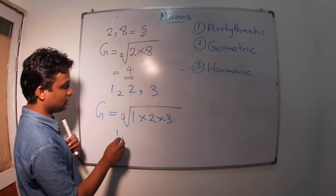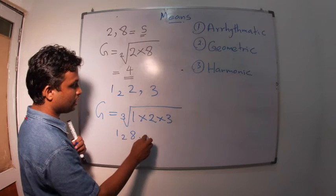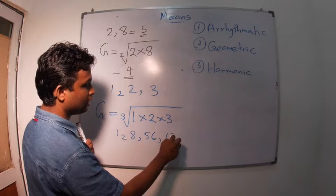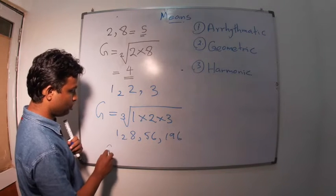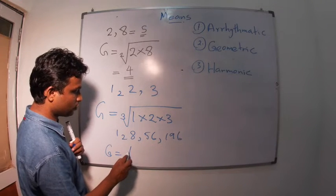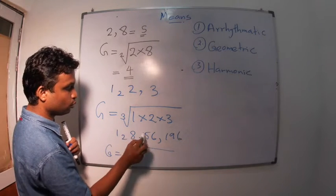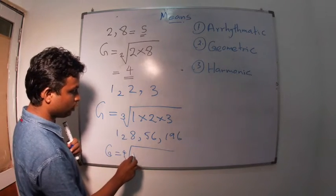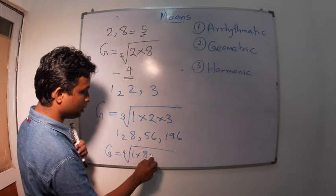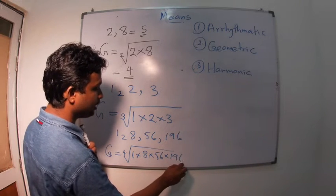If data series is 1, 8, 56, 196. Geometric mean equals square root. As we have four values, 1, 2, 3, 4. So, fourth root and 1 multiplied by 8 multiplied by 56 multiplied by 196.